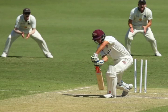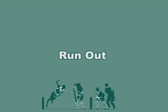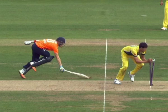Stumped: A batsman can be given out according to cricket rules when the wicket keeper puts down his wicket while he is out of his crease and not attempting a run — this is known as stumped. Whereas if he is attempting a run, it would be a run out. Run Out: According to cricket rules, a batsman is out if no part of his bat or body is grounded behind the popping crease while the ball is in play and the wicket is fairly put down by the fielding side.